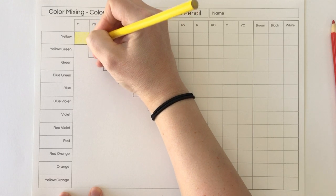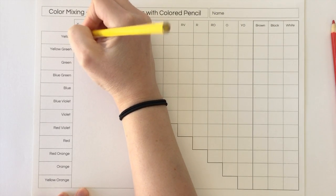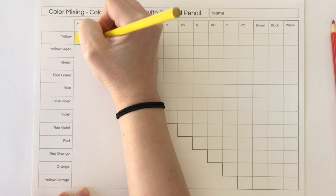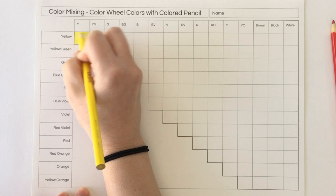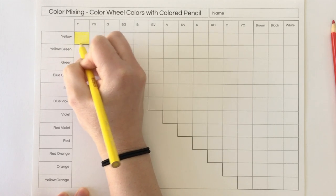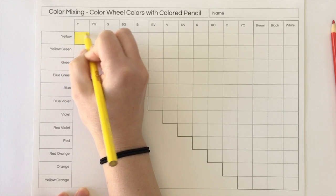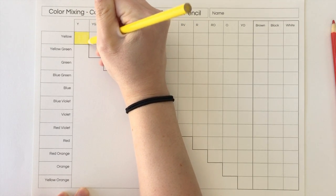So I'm not just going to go ahead and color this whole row yellow. For this box, like I said, it's just going to be yellow. I'm going to make sure that it's dark and opaque and even and the entire box is colored.